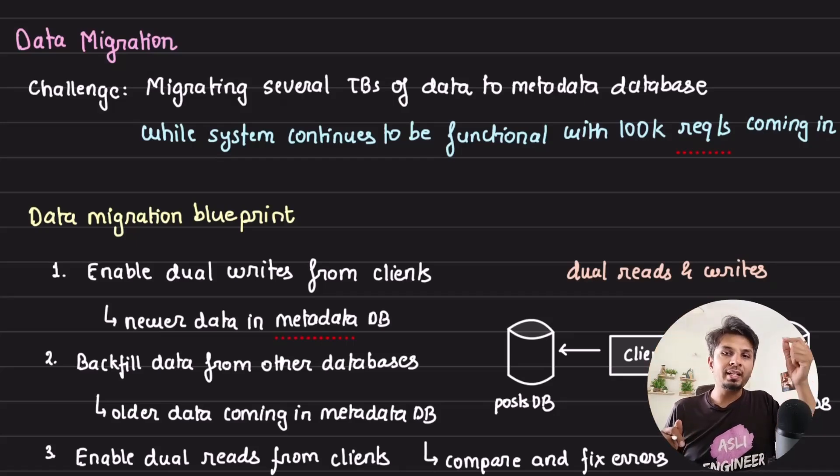They had to migrate the existing data from the current databases into this unified metadata store. The key challenge here was to migrate several terabytes of metadata from various sources. To tell you the sheer scale of it, they currently serve 100,000 requests per second, which means the live traffic is there. And now while ensuring that live traffic continues to be served, they need to do this data migration, which is what makes it interesting.